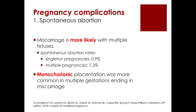Pregnancy complications begin with spontaneous abortion — miscarriage rates are higher with multiple fetuses. For a singleton pregnancy, the incidence is around 0.9%, compared to 7.3% in multiple pregnancies. Monochorionic placentation is more common in multiple gestations ending in miscarriage.